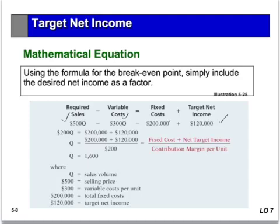Mathematically, 500q minus 300q gives us 200q, and on the other side of the equation we have fixed cost plus the target net income. The quantity needed is simply the fixed cost plus target net income divided by the contribution margin per unit, giving us 1,600 units.